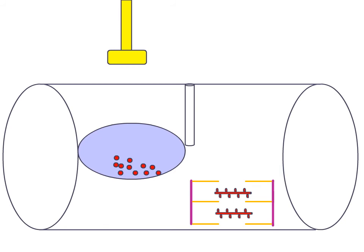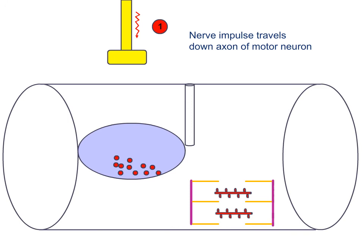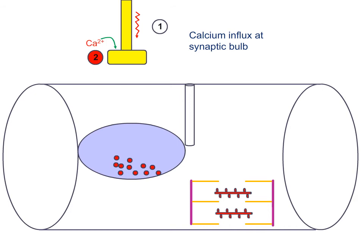Taking a step back from the muscle cell, we see the yellow structure up top is a motor neuron — remember that motor neurons control the contraction of skeletal muscle. The first step is the arrival of an action potential or nerve impulse at the end of the motor neuron, propagated from the spinal cord or brain. Once the action potential arrives at the end of the axon or end bulb, this causes an influx of calcium into the axon bulb, which causes the release of synaptic vesicles containing the neurotransmitter acetylcholine.